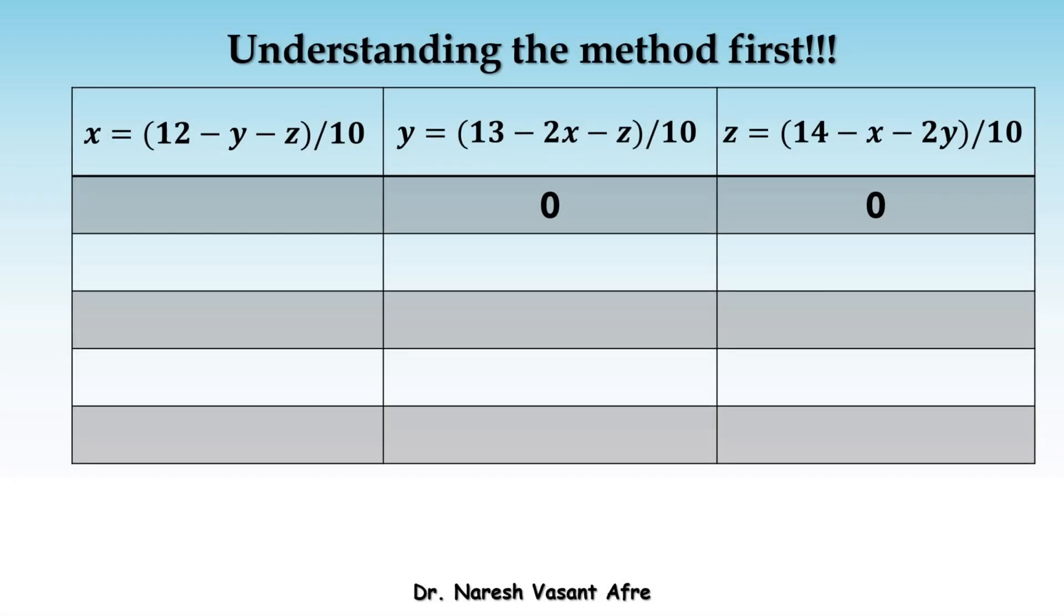Let us understand the method first. What we do is, we initially take Y equals 0 and Z equals 0 and we put it in the value of X. That gives us X is equal to 12 by 10 and that is 1.2.